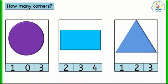Students, in this activity you will tell me the corners of each shape. Look at the first shape. This shape is circle. Circle has no corners — that means zero. Look at the rectangle. Rectangle has four corners.